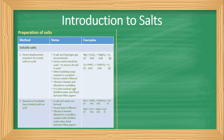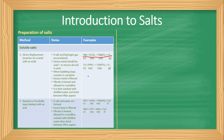Excess metal is then filtered, the filtrate is heated and allowed to crystallize, then washed with distilled water and dried between filter papers. Examples of salts produced through this method include magnesium sulfate — from the reaction of magnesium metal with sulfuric acid — and calcium nitrate — from calcium metal reacted with nitric acid.